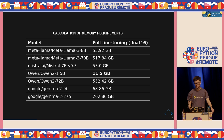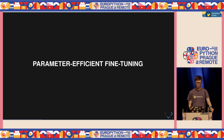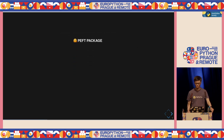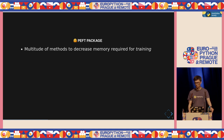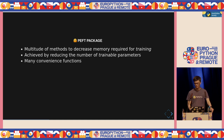So is there anything we can do about this? Of course there is — otherwise I wouldn't be here. The solution is called parameter-efficient fine-tuning. I want to introduce one of the packages we developed at Hugging Face, called Hugging Face PEFT. It implements a lot of different methods that allow you to use parameter-efficient fine-tuning to decrease the memory you need for training. This is achieved by reducing the number of trainable parameters, and we also provide a bunch of convenience functions you typically need when working with these types of models.